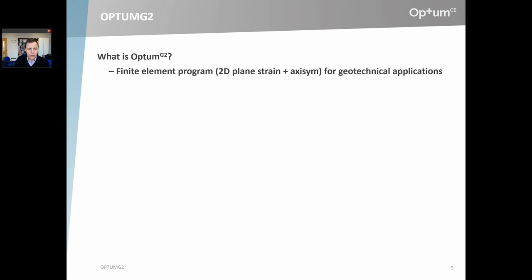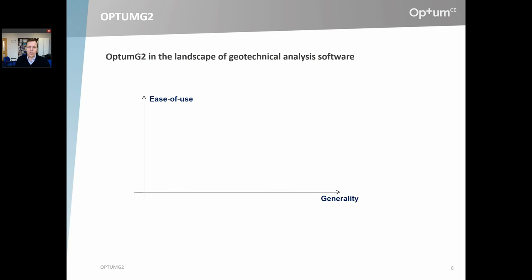What is Optum G2? It is a finite element program for geotechnical applications in 2D — plane strain and axisymmetry. The G stands for geotech and the 2 stands for 2D. I wanted to say a few words about where Optum G2 fits into the landscape of geotechnical analysis software. I've drawn a diagram where the Y-axis plots ease of use and the X-axis plots generality, so different programs fit differently in this diagram.